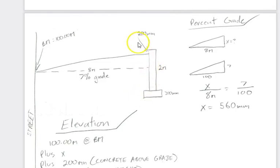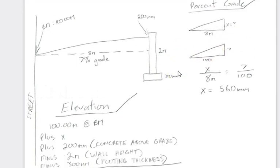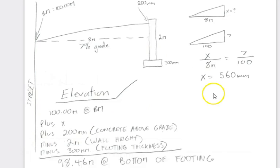We have enough info now to figure out what the elevation of the bottom of the hole is going to be. That's your first bit of math for these problems. Your second move is figuring out the elevation at the bottom of the hole. We have our 100 here, our benchmark, the horizontal line. We're going to add X, which we just found to be 560 millimeters, or 0.56 meters.